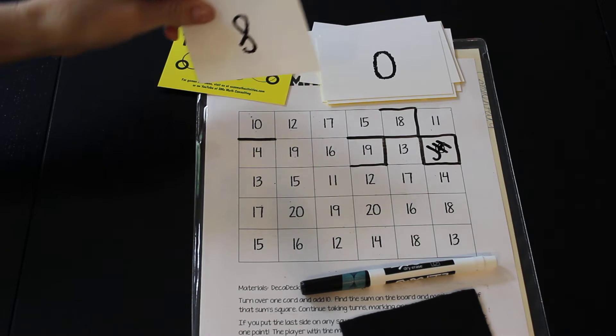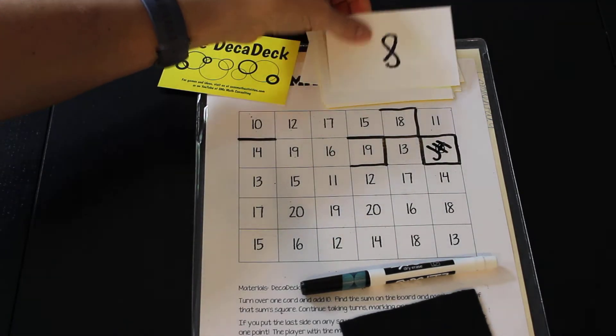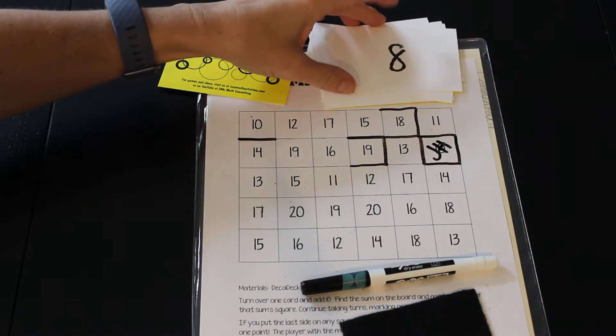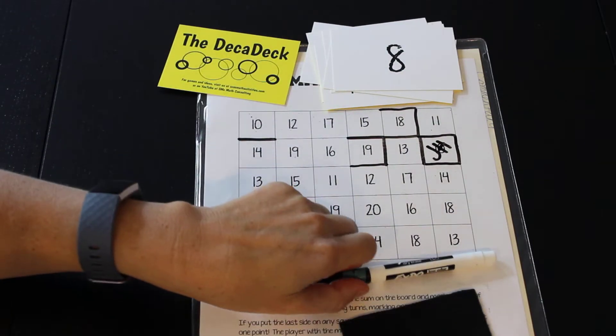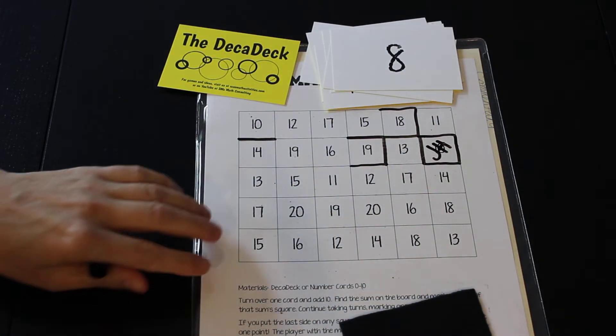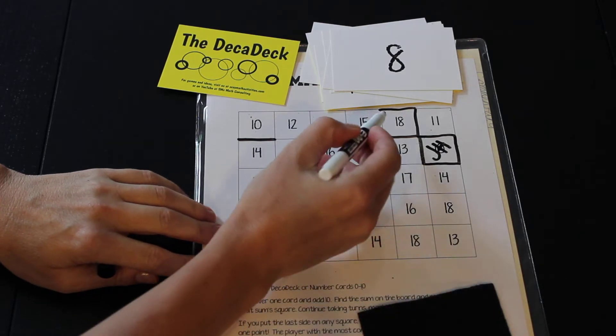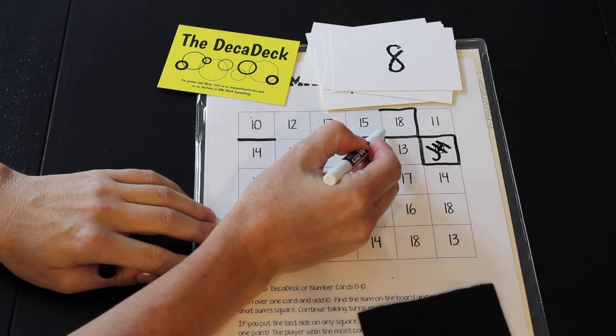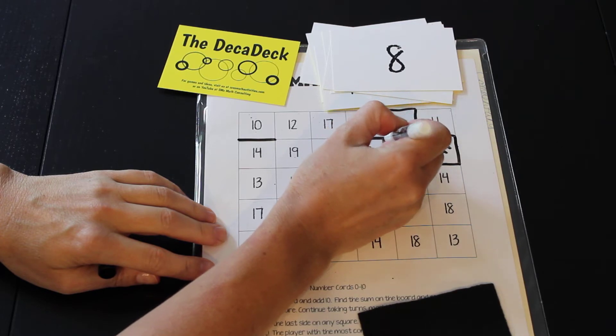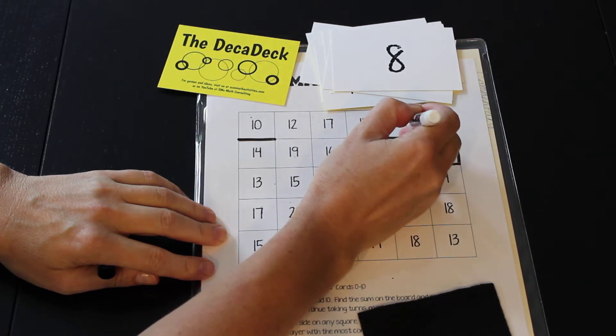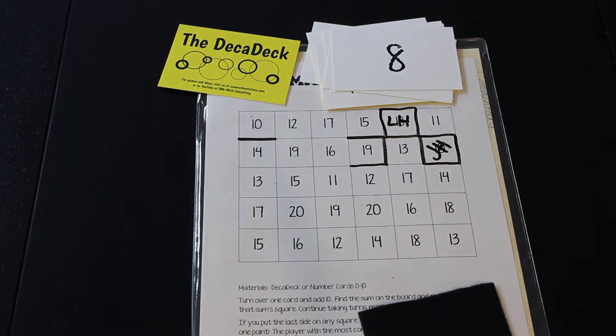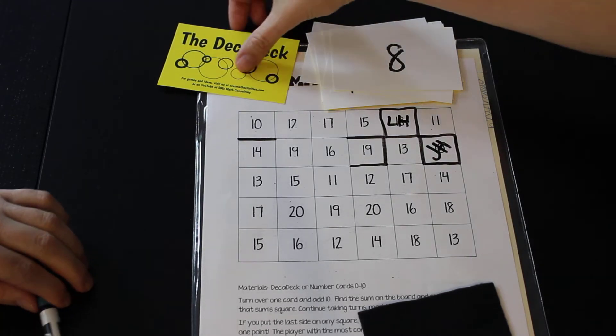Okay, come on, something to give me a point. Oh, look at this, I got an eight, and eight plus ten is eighteen. So I could put a line here, but that would be silly because I can color in this side and finish that box around the eighteen and put my initials right there. Awesome.